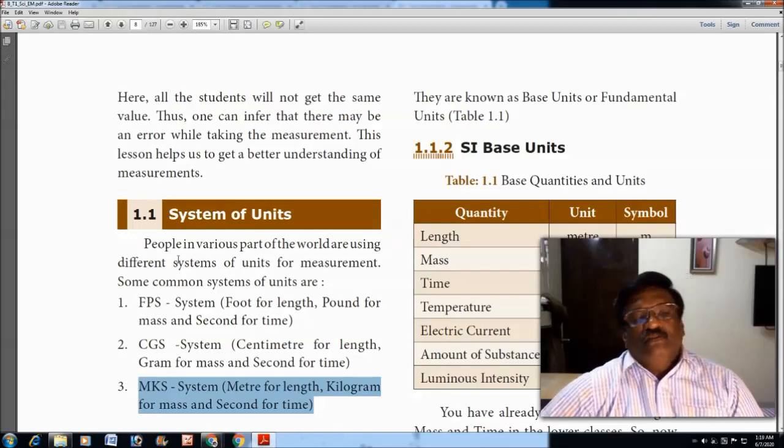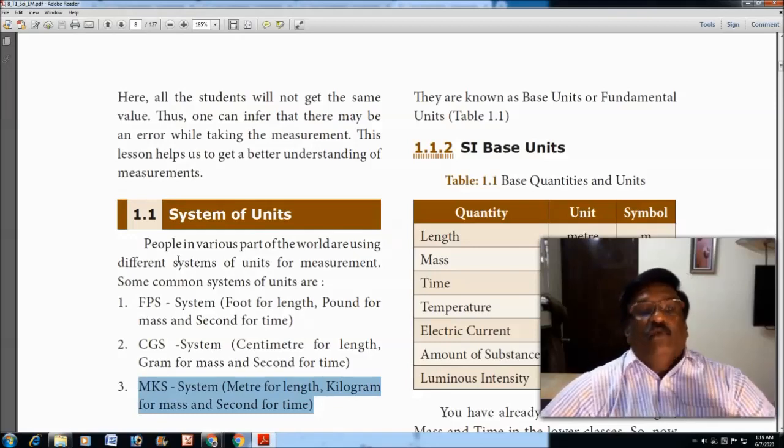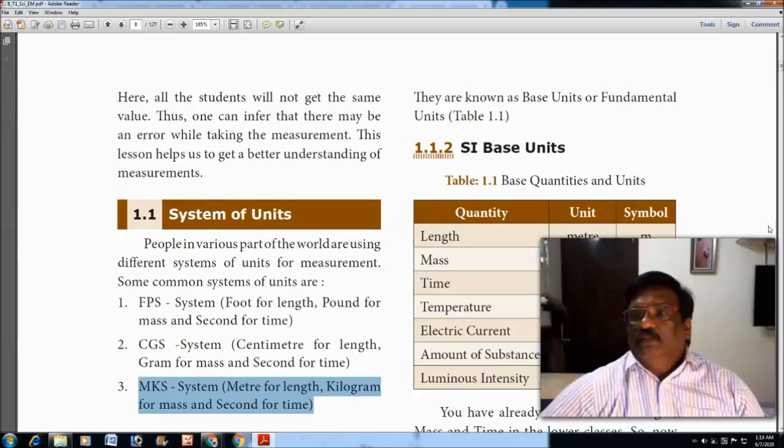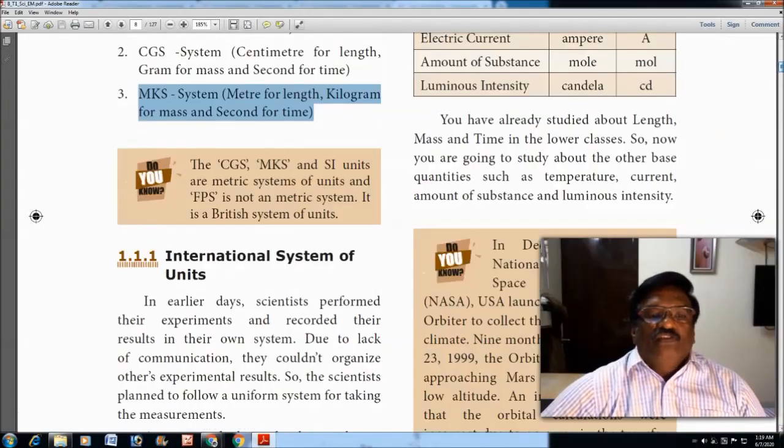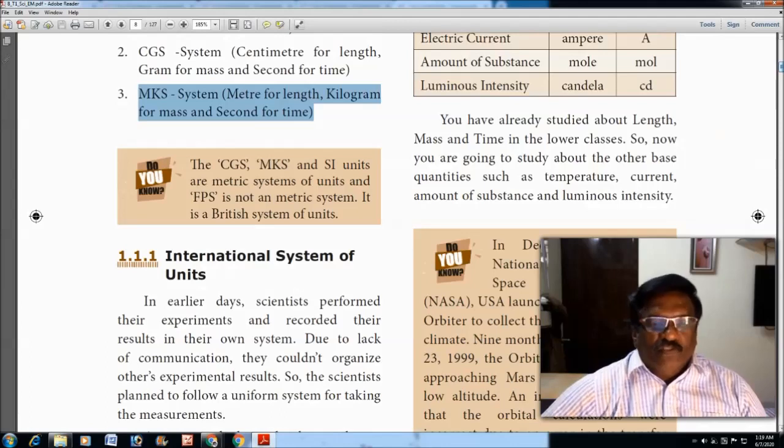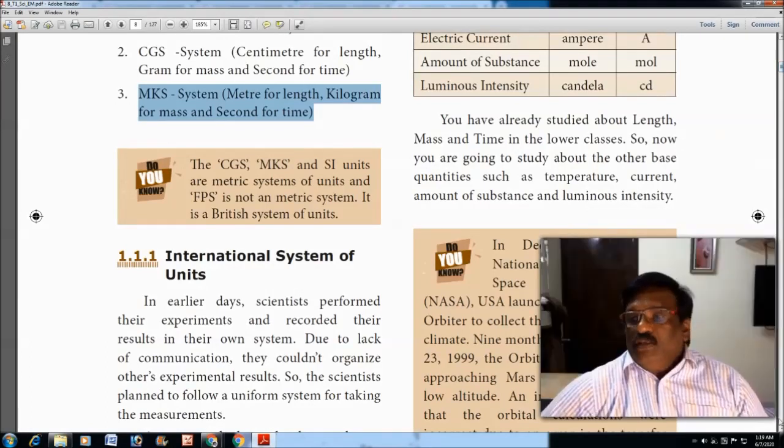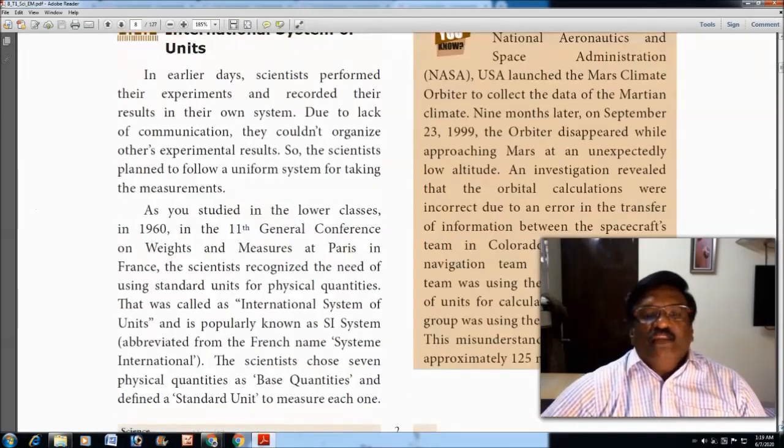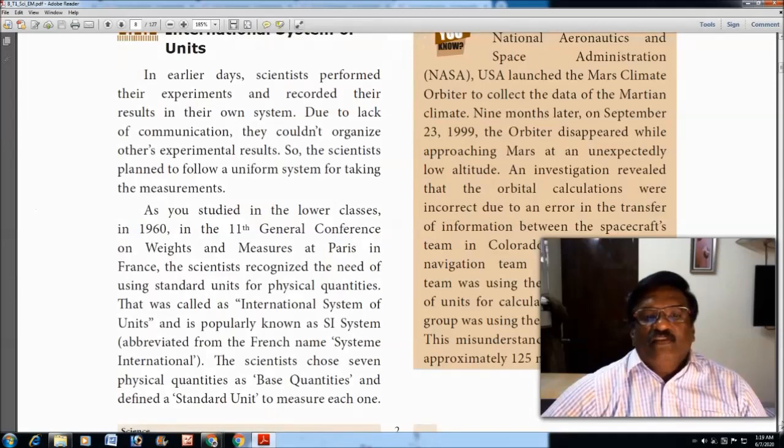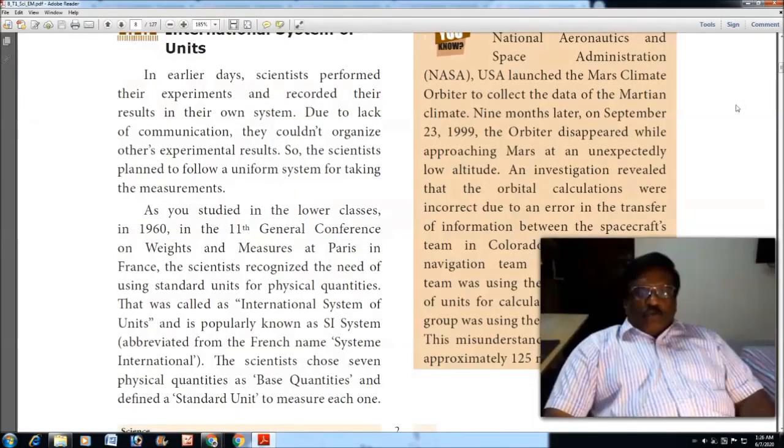These systems of units were derived before the SI system. The SI system is derived only after this and is called the International System of Units. As you studied in lower classes, in 1960, in the 11th General Conference of Weights and Measures at Paris, France, the scientists recognized the need for using standard units for physical quantities.